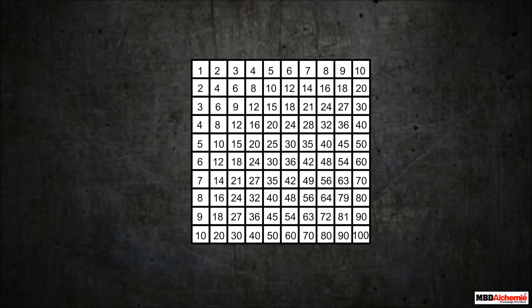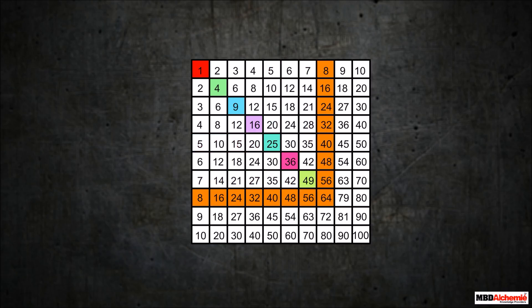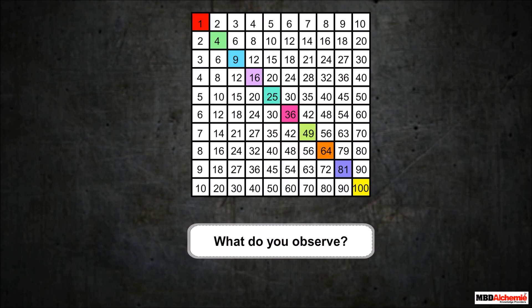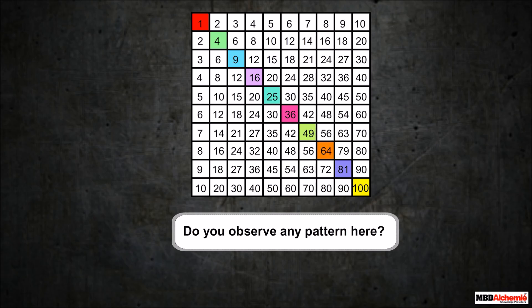Let us see the multiplication grid up to 100. Now, we shade the square numbers: 1, 4, 9, 16, 25, 36, 49, 64, 81, 100. Now, what do you observe? Do you observe any pattern here?